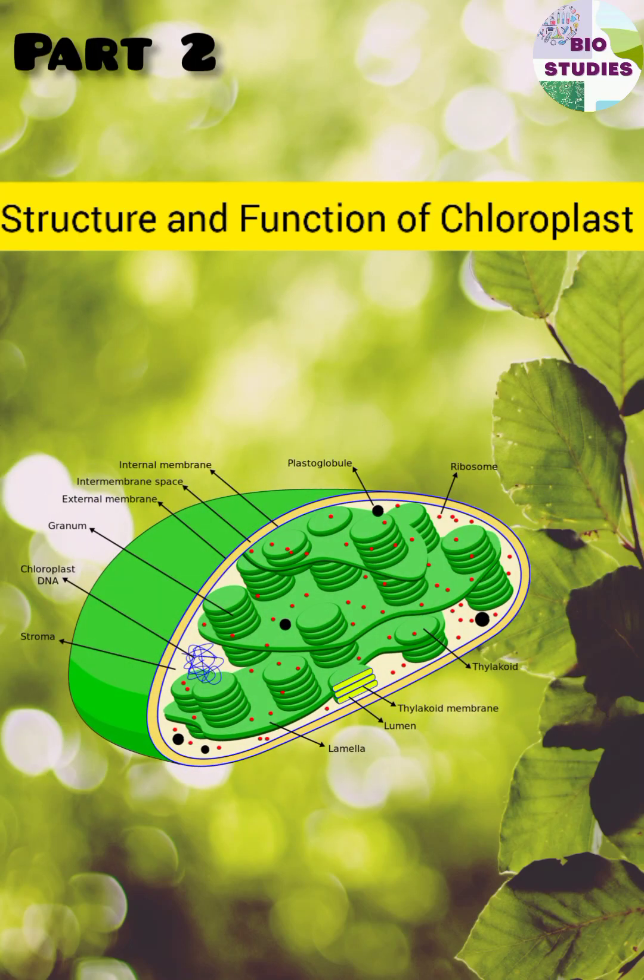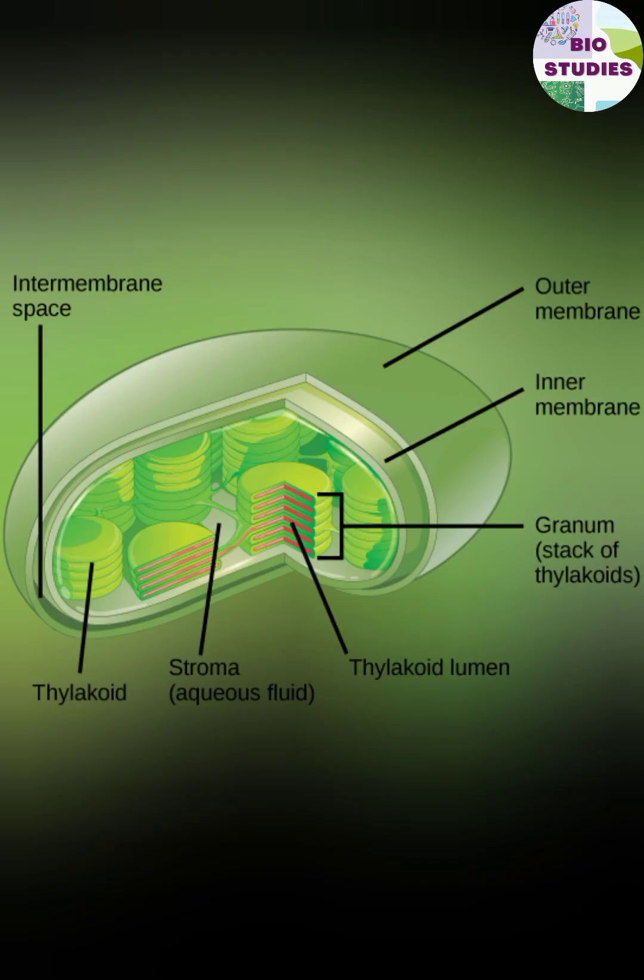Let's quickly understand the structure and function of chloroplasts. Chloroplasts are flat, disc-shaped structures. There are two membranes: outer and inner.